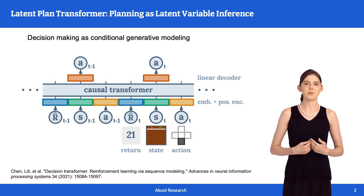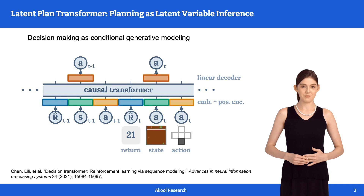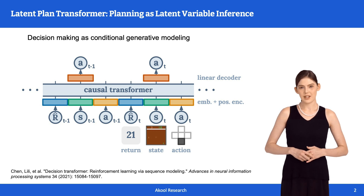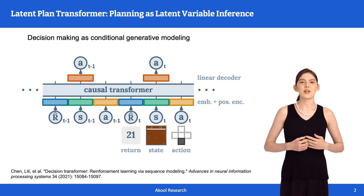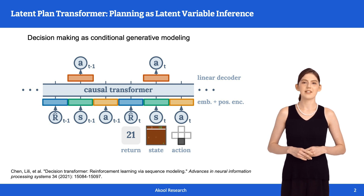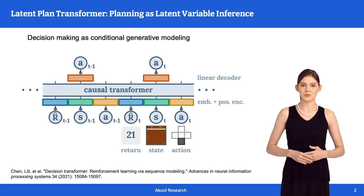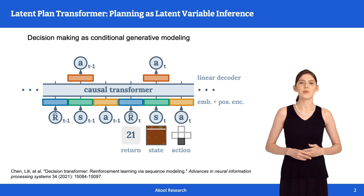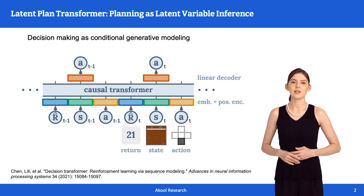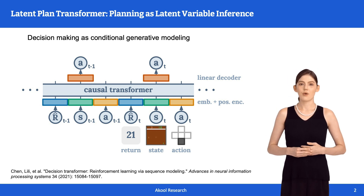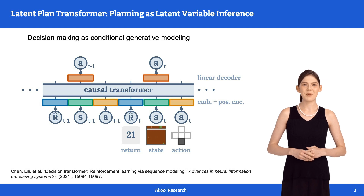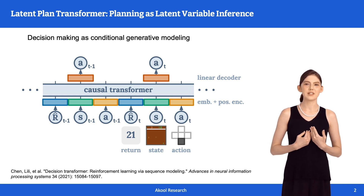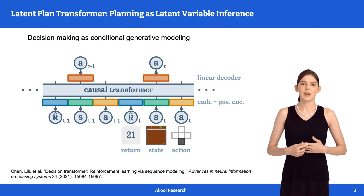A key distinction between stepwise rewards and returns is that rewards are defined at each step, which can be notoriously difficult to label. In contrast, the return is cumulative, providing a single value for the entire trajectory. In the classical decision making literature, this process is achieved through two interweaving processes: policy evaluation and policy improvement. Policy evaluation promotes consistency in the estimated correlations between trajectories and returns. In the Decision Transformer, this is realized through maximum likelihood estimation of the joint distribution of sequences and return-to-goes, where return-to-goes is the summation of rewards from the current time step to the future. Policy improvement shifts the distribution to enhance the expected returns. In the Decision Transformer, this is naturally achieved since the policy is a distribution of actions conditioned on stepwise return-to-goes.